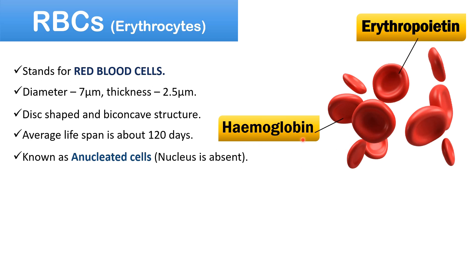Do you know why RBCs are red in color? It's because of hemoglobin. Hemoglobin is a red colored, iron-containing protein which carries oxygen and transports it to different body parts.